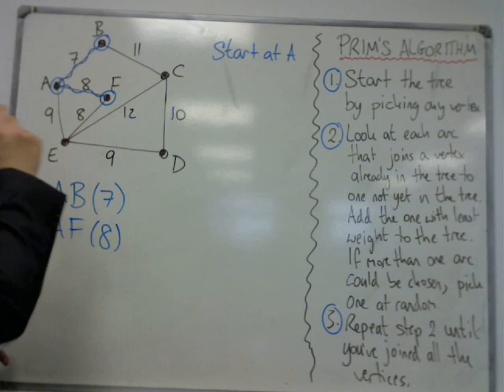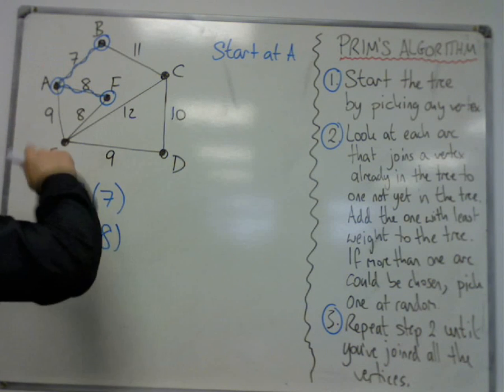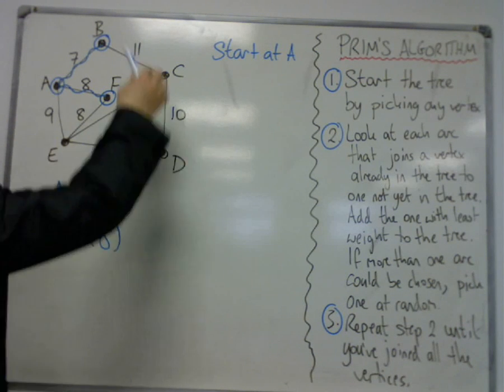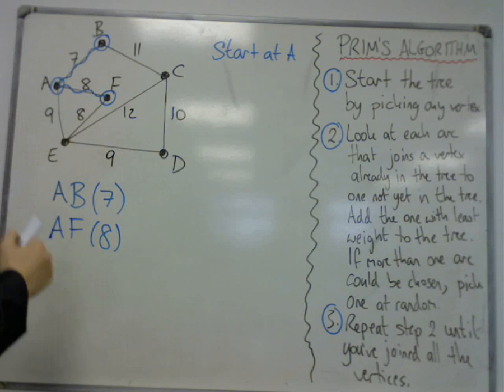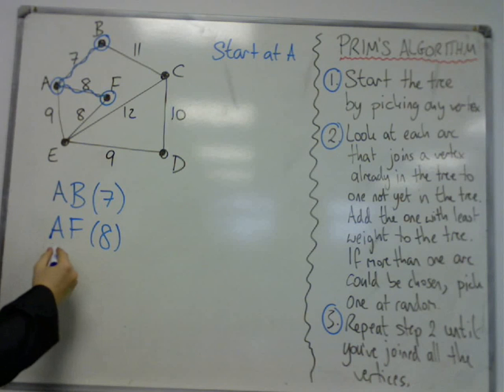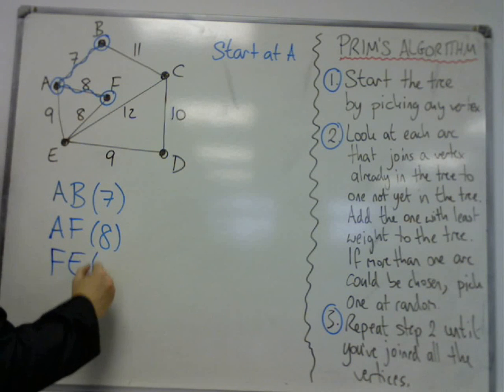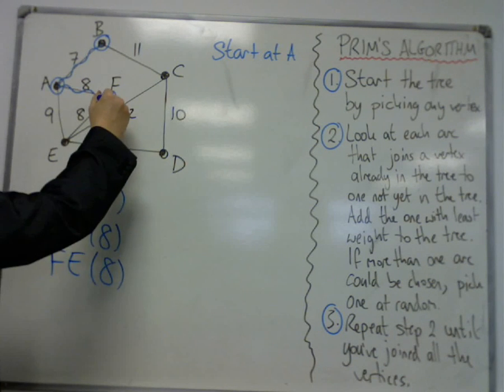Now I'm then looking at all of the edges coming out of all three vertices. B, C, A, E, and F, E. And the shortest one is F, E. So that's the next one I pick.